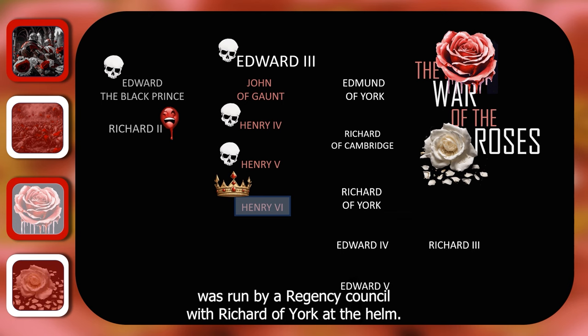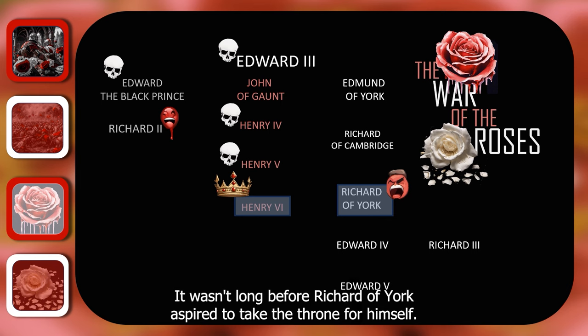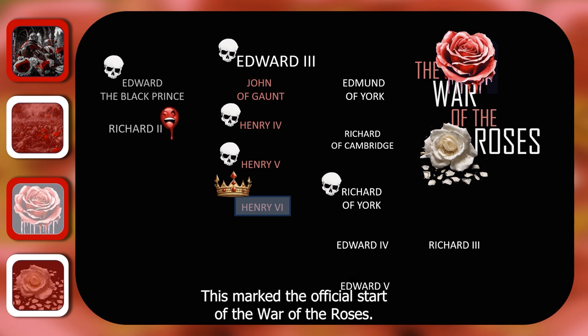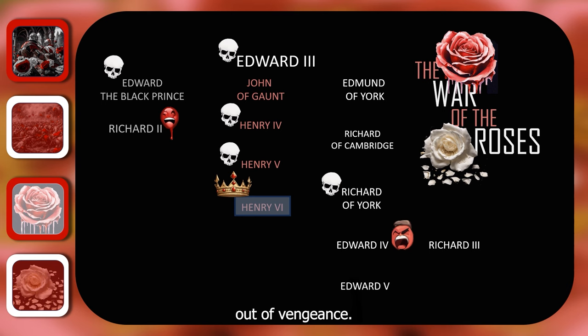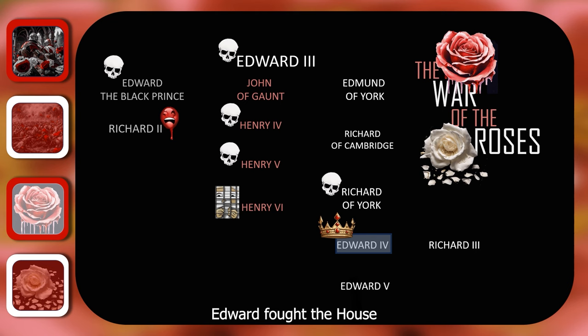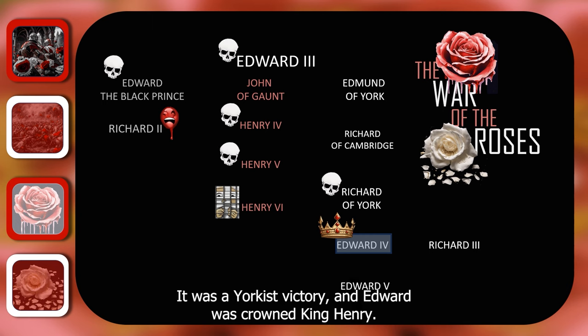It wasn't long before Richard of York aspired to take the throne for himself. Richard of York attempted to take the throne — this marked the official start of the War of the Roses. However, he was defeated in 1460 at the Battle of Wakefield, which resulted in his son Edward seeking the throne out of vengeance. Edward fought the House of Lancaster at the Battle of Towton in 1461, known as the bloodiest battle ever fought on English soil with up to 20,000 dead. It was a Yorkist victory, Edward was crowned king, and Henry VI was imprisoned.